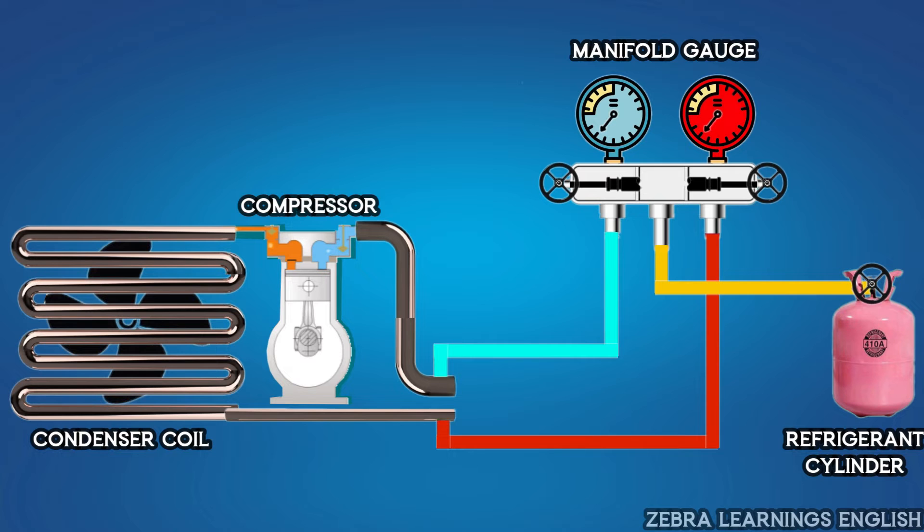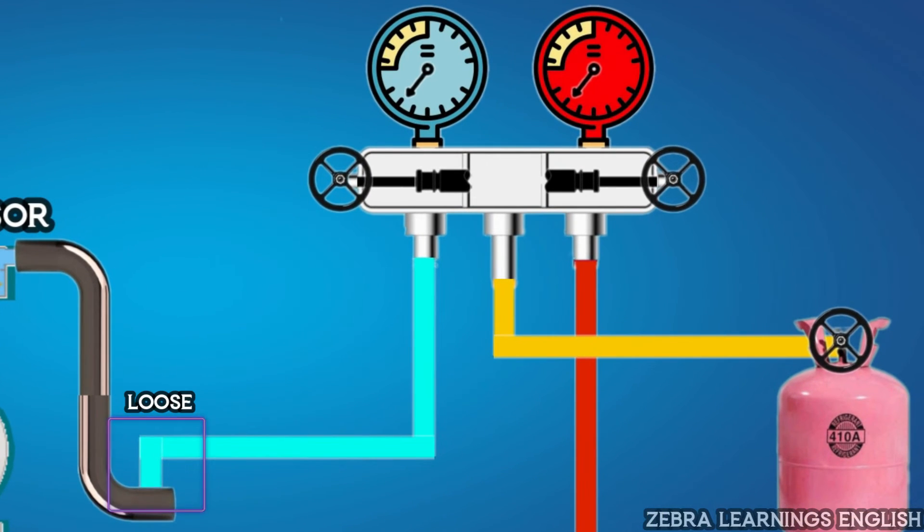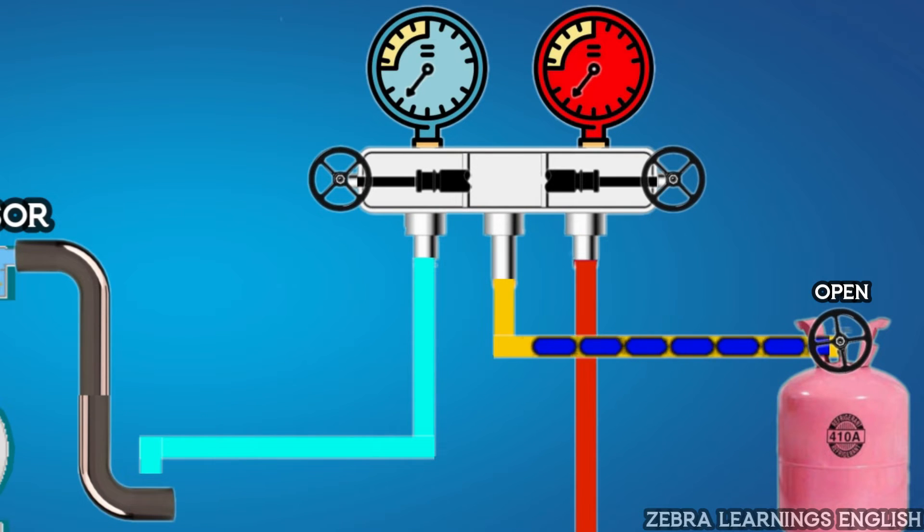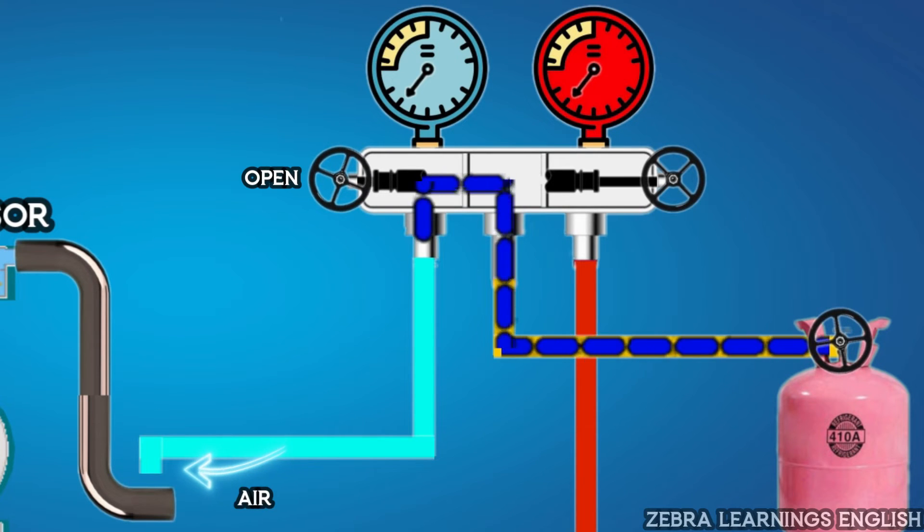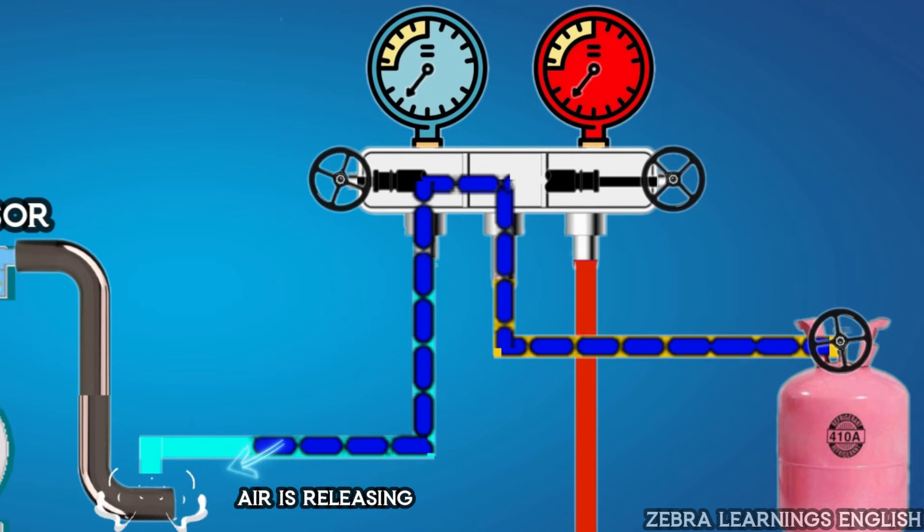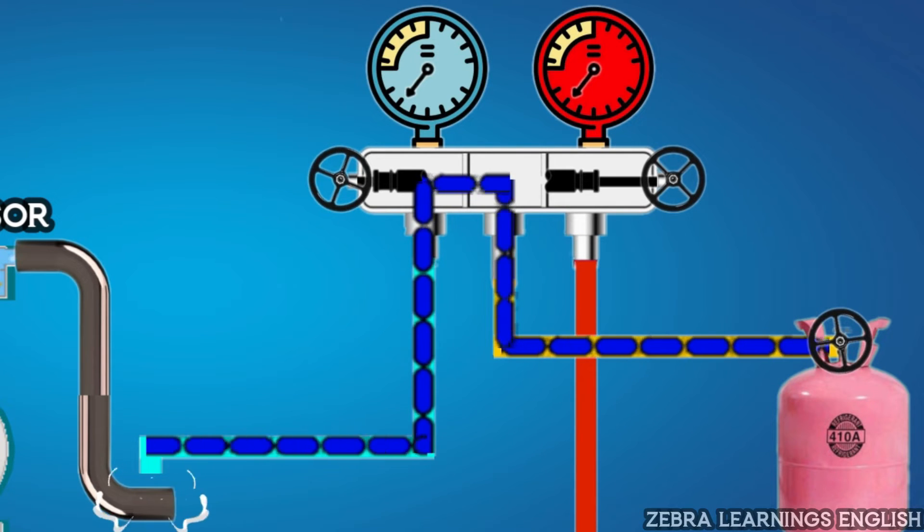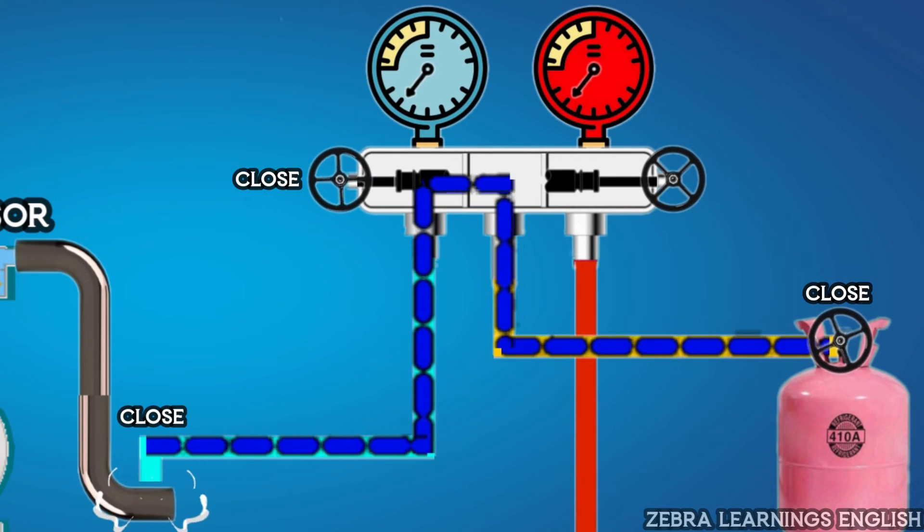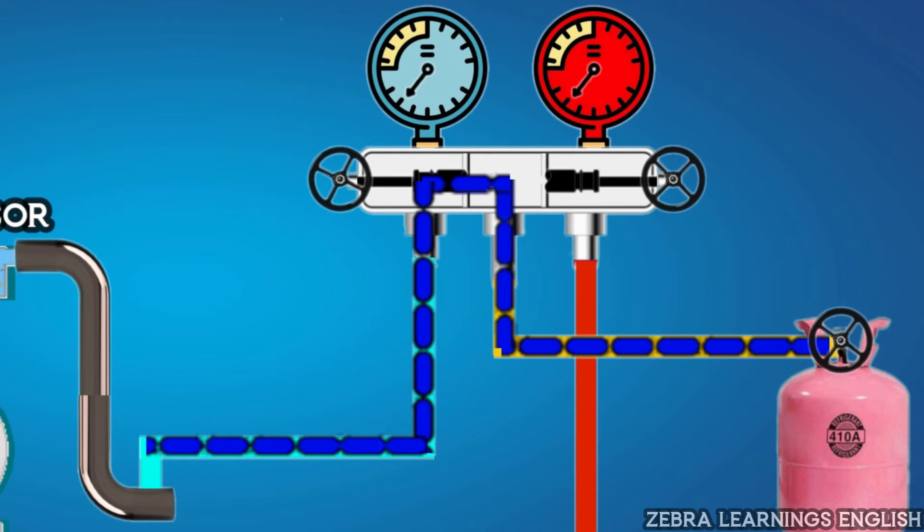Now, loosen the low-pressure hose a little from the charging port. Then, open the refrigerant cylinder and then open the low-pressure on-off valve. Now, the refrigerant is leaking through the low-pressure hose. By doing this, the air inside the hose will escape. Now, tighten the low-pressure hose in the charging port and close the cylinder and on-off valve.